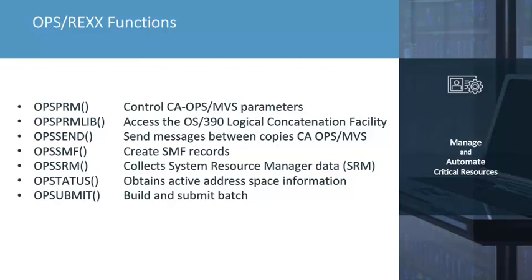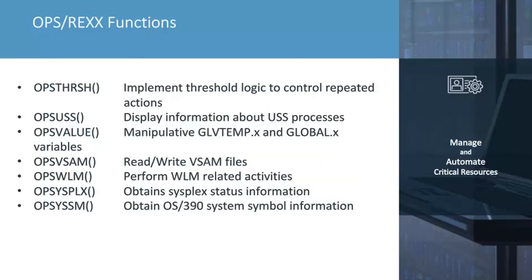Additional capabilities include obtaining a WTOR associated to an ACID with the OpsStatus function; dynamically creating and submitting batch job JCL on the fly by constructing the OpsSubmit function; utilizing the OpsThresh function to implement threshold or throttle logic, preventing automated actions within a rule from reoccurring when the triggering event is being issued repeatedly; manipulating VSAM files by accessing the OpsVSAM function; and querying sysplex-related information from the OpsSysplex function. There are many different OpsMVS OpsRex functions available to obtain the system-related data you need in order to make effective logical decisions within your automated applications.